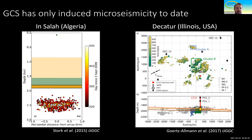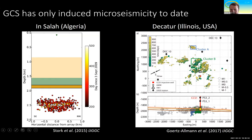I would like to start by highlighting that CO2 storage has not led to any major earthquake to date — the maximum magnitude has always been lower than magnitude 2. Here you can see two examples. One is In Salah in the Algerian desert, where they were storing CO2 in this orange formation, and the microseismicity was occurring below it. In the case of K2, again the maximum magnitude was 1.7, and most of it occurred in the crystalline basement.